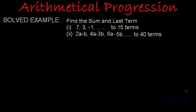In this video we are going to solve a few problems based on arithmetical progressions. The problem statement says: find the sum and last term of the following sequences. The first sequence is 7, 3, minus 1, up to 15 terms.